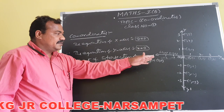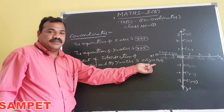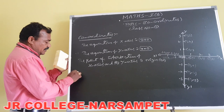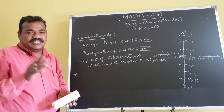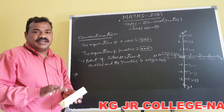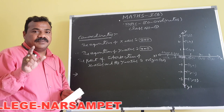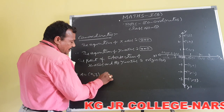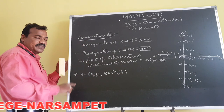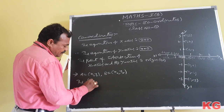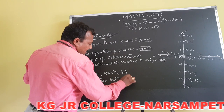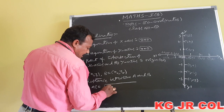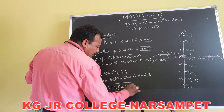In two-dimensional geometry, we discuss the distance between two fixed points, the midpoint of the line segment joining the points, the area of the triangle formed by three points, and the centroid. For two fixed points A(x1, y1) and B(x2, y2), the distance AB is given by: AB = √[(x1 - x2)² + (y1 - y2)²].